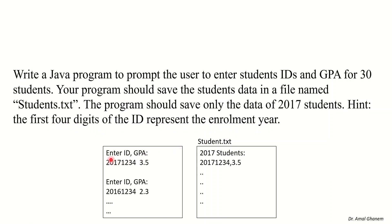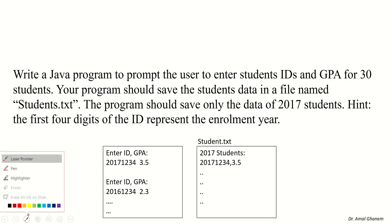We will read from the keyboard — we will ask the user to enter ID and GPA. For example, the student ID could be 201712345, then space 3.5. We have to open a file student.txt. The first line should write a message '2017 students', and then list the students. We will read 30 students, but output only those who are 2017 students.